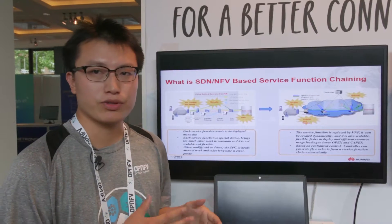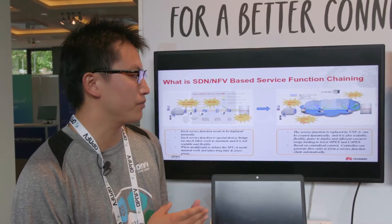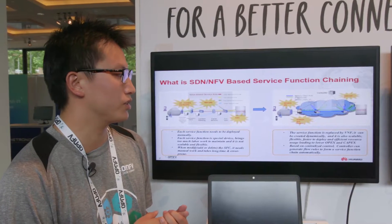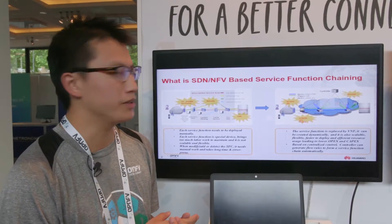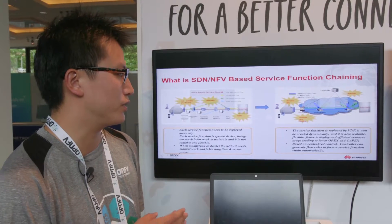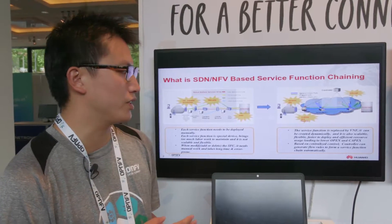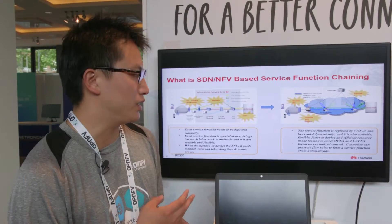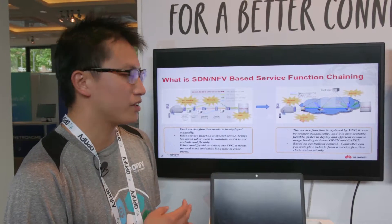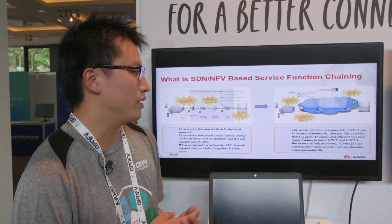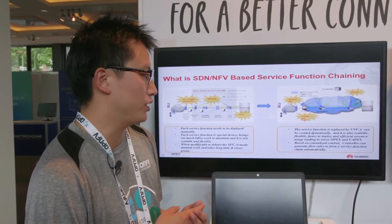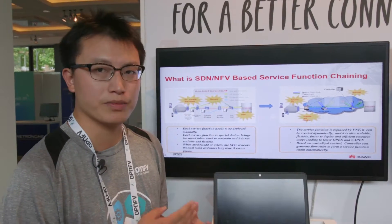When we use SDN/NFV-based service function chaining, the service function is replaced by a VNF. It can be created dynamically, and it is also scalable, flexible, and faster to deploy with efficient resource usage, leading to lower OPEX and CAPEX. Based on centralized control, the controller can generate flow rules to form a service function chain automatically.